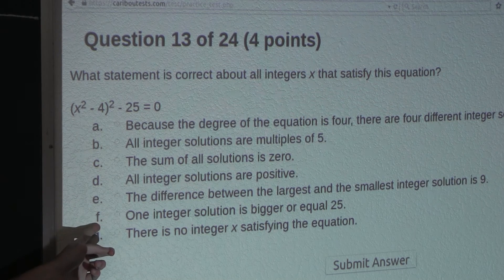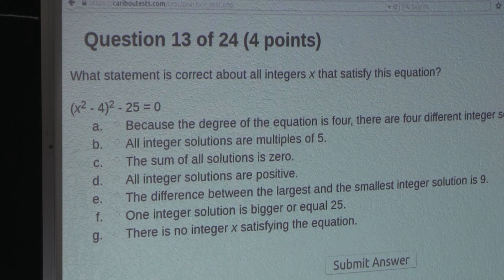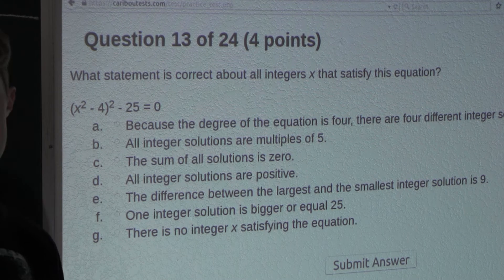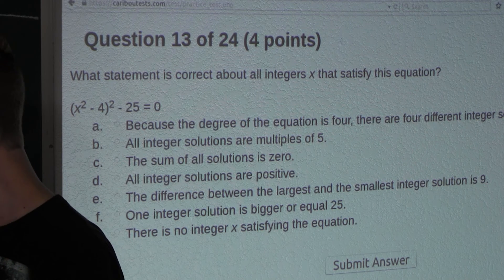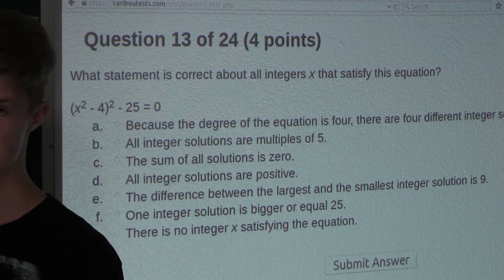So, option F: One integer solution is bigger or equal 25. That's also false because the biggest solution here is 3.